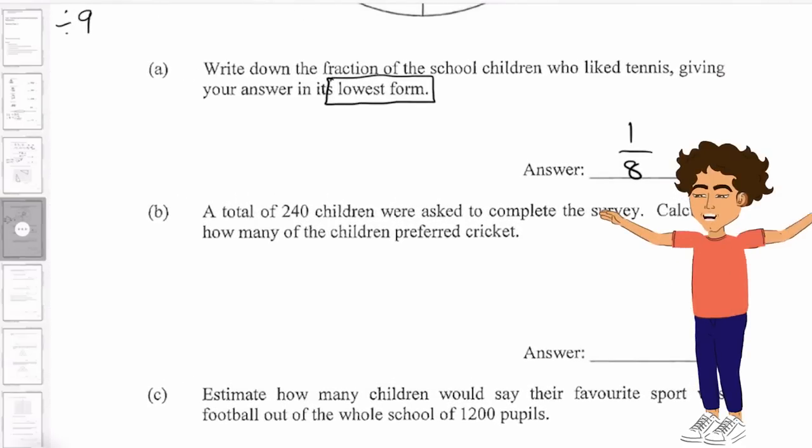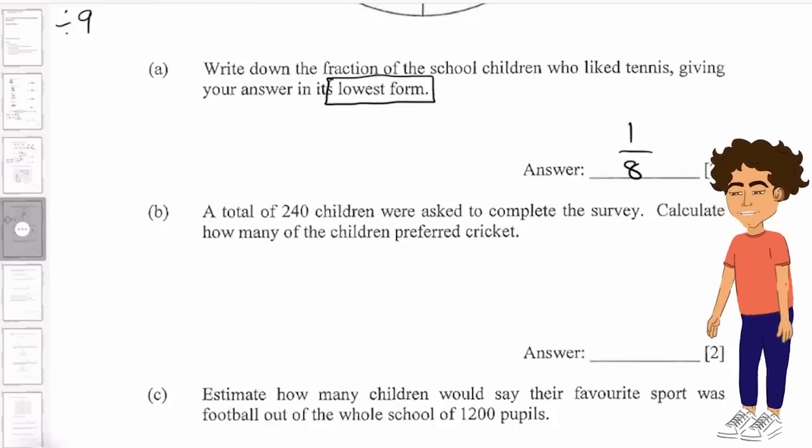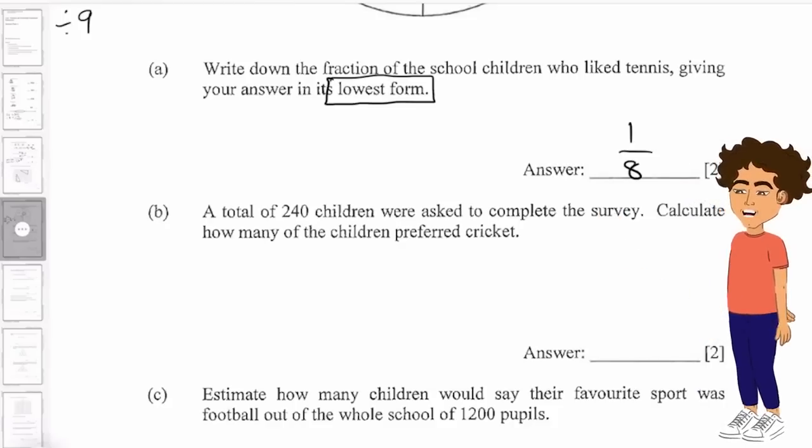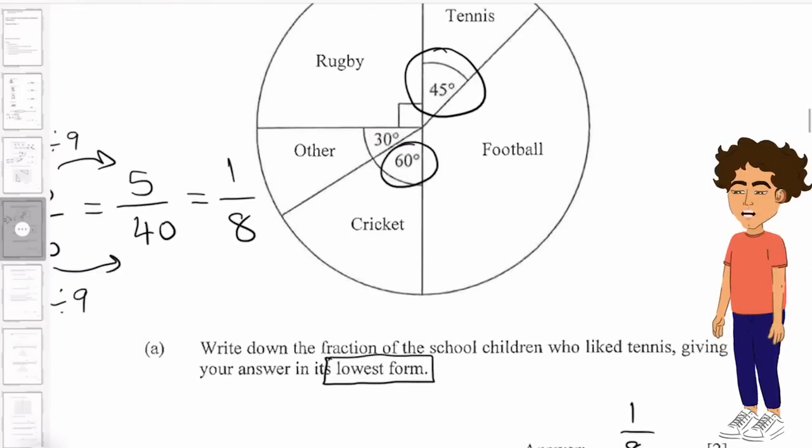A total of 240 children were asked to complete the survey. So now we know the amount that they've given us. And they want to calculate how many of the children preferred cricket. If we take a look at cricket, we can see it was 60 degrees.